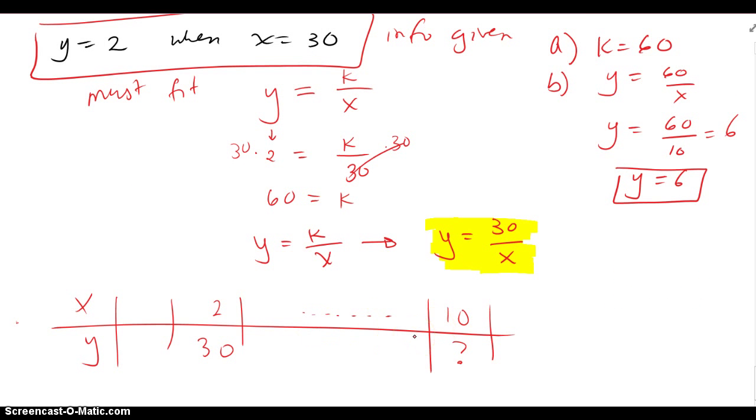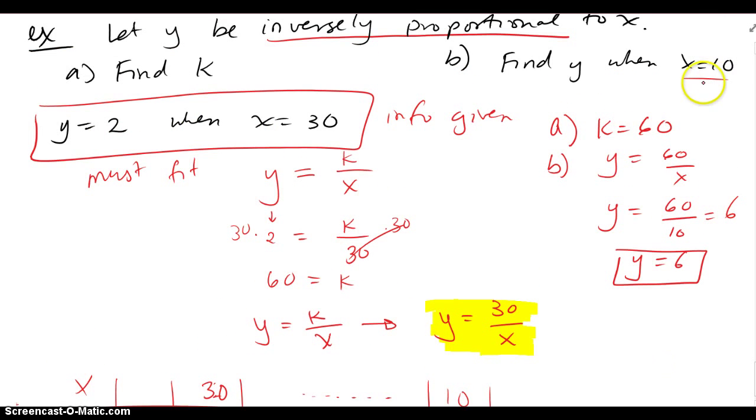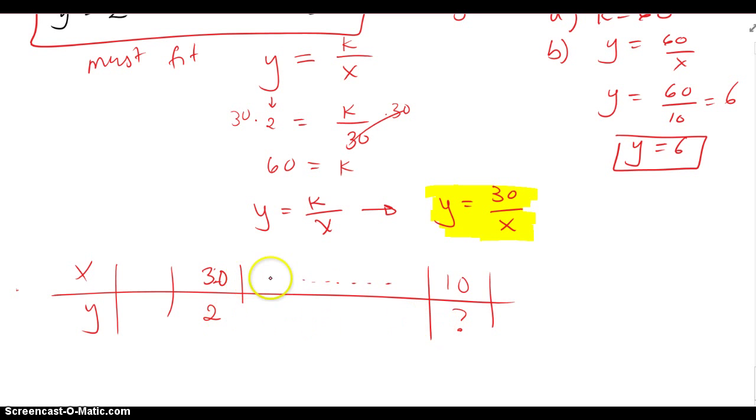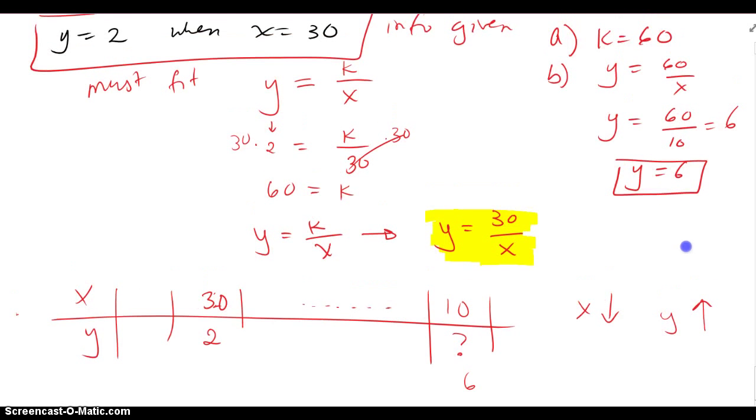So if I look at this inverse variation in table form, when X is 30, Y is 2, and then since this is inversely related, when X gets smaller and goes down to 10, which is what we were given to find the corresponding Y value, as X goes down, Y should go up, and it looks like it has gone up based on what we found. So notice their product is always going to be 60 to get that K value. 30 times 2 is 60, and 10 times Y gives me 60, so the missing value has to be 6.